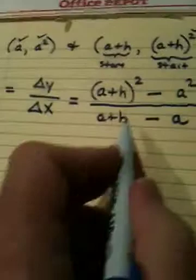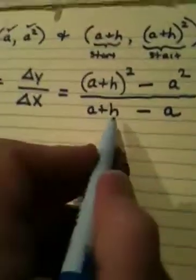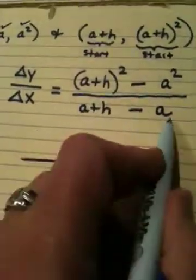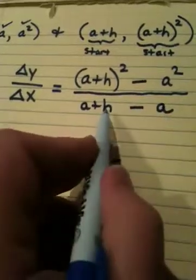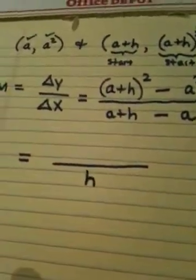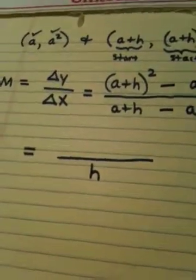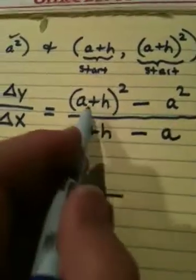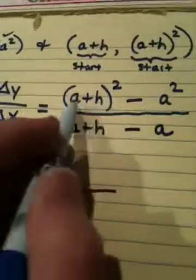Now to do this problem, let's look at it. The bottom is real easy, the denominator rather. a minus a, of course, becomes zero. Zero plus h is just h. So the denominator is virtually taken care of. Now, in the numerator, (a+h)² I've got to do out. So let me go kind of to a side of my paper. I'm going to walk off to the side.